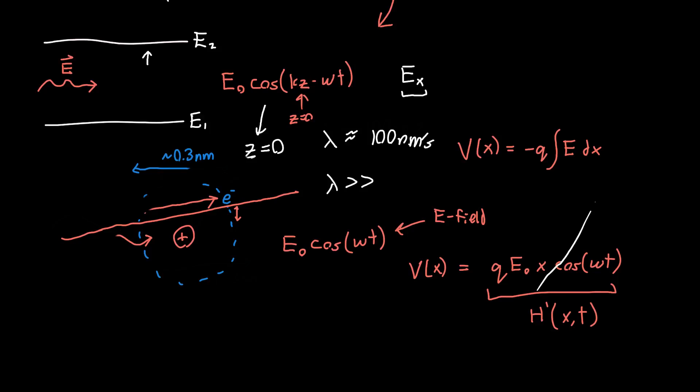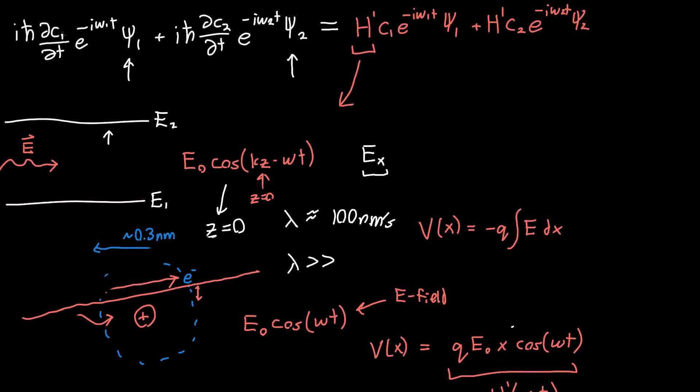And so now we want to plug in this value that we've just found. We want to plug in this perturbing Hamiltonian here and just see what happens, and then try to simplify this equation as much as possible so that it actually becomes tractable. Cause right now, look at how gross this is. We've got the imaginary number, we've got some physical constants, time derivatives, complex exponentials, wave functions. It's complicated, but we can just plug this in and then try to simplify things. And then hopefully we'll get a reasonable equation at the end. And so that's what we're going to be doing in the next video.